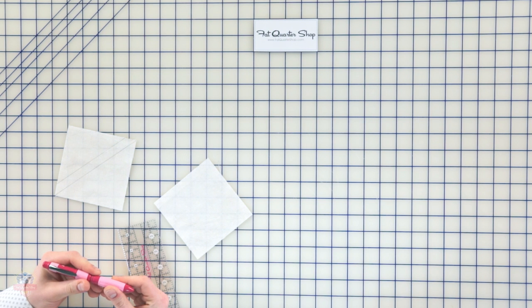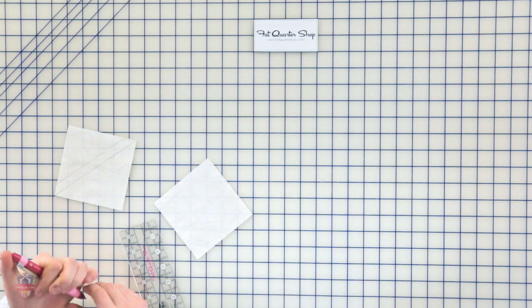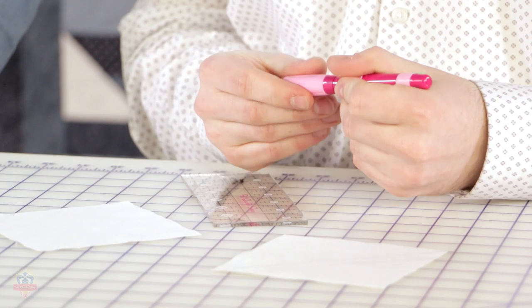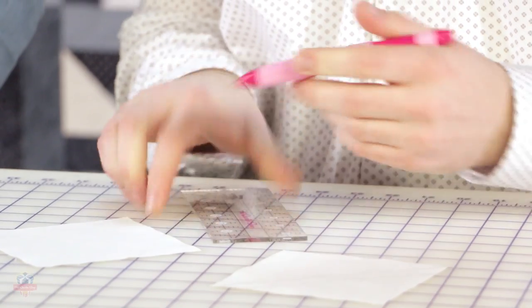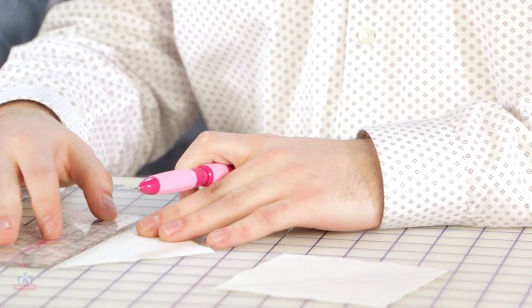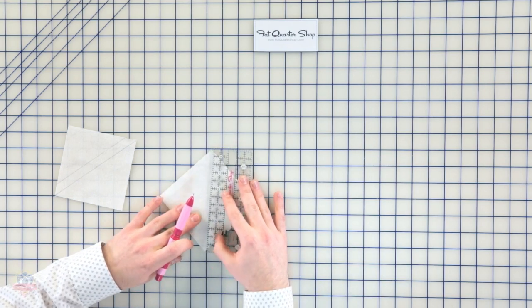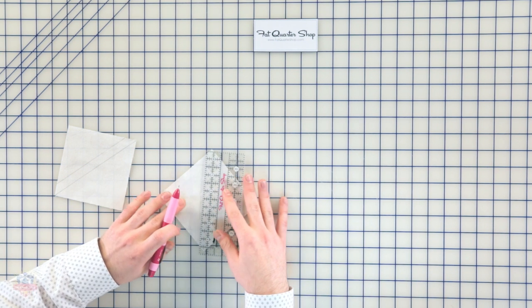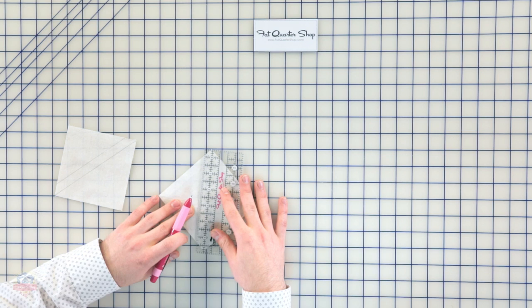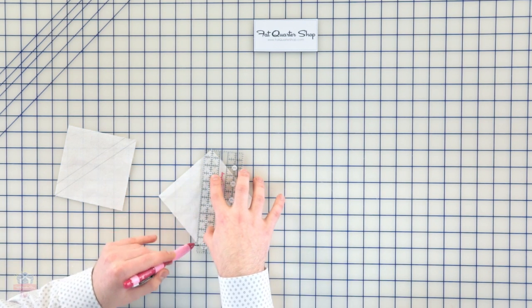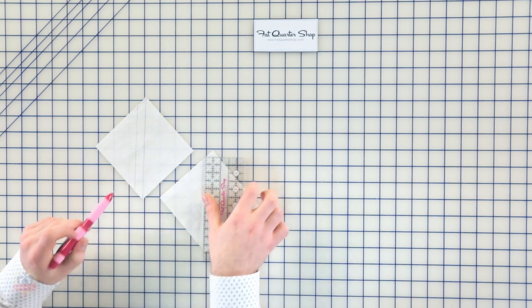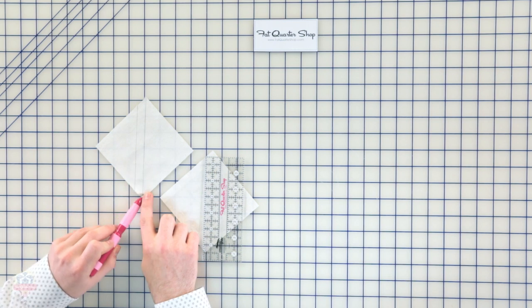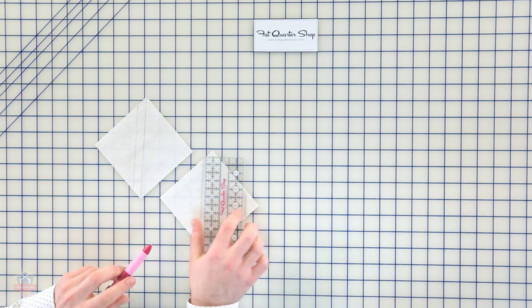I like to use the Trio pencil from Sew Line. What we're gonna do is use our square and a ruler and draw a line from corner to corner. Then you're gonna go a half of an inch over from corner to corner and draw another line. So you have one line that's corner to corner and then an offset line by half of an inch.